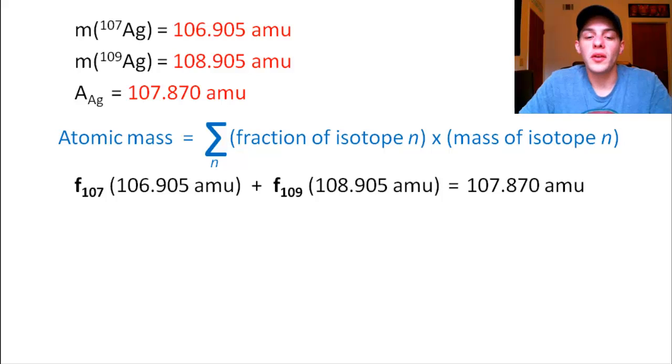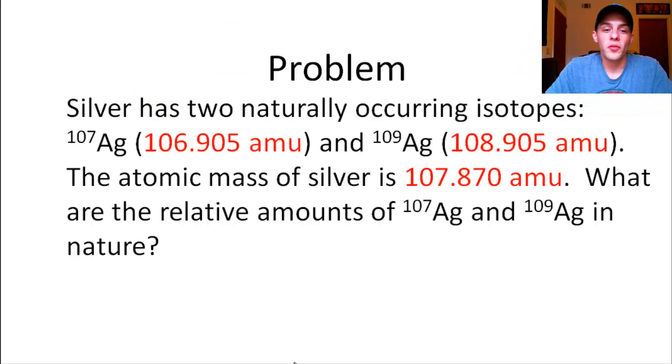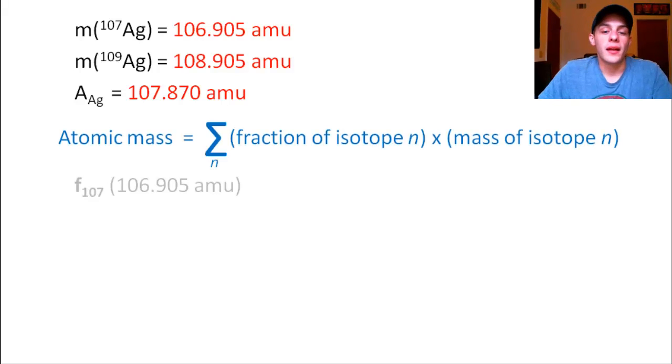So the way that you get your other equation is, again, like I said, you have to think outside the box a little bit. But it has to do with the very, very first sentence of the problem. Let's go back to the problem real quick. It says silver has two naturally occurring isotopes. So that means that whatever those percent abundances are of those two isotopes, they're going to add to 100. So let's write that down.